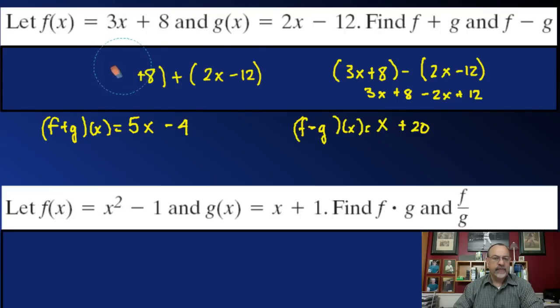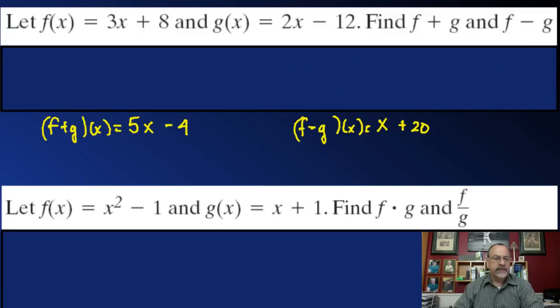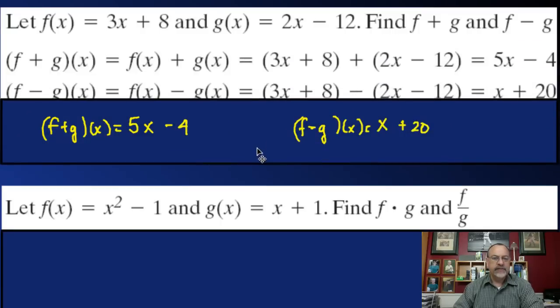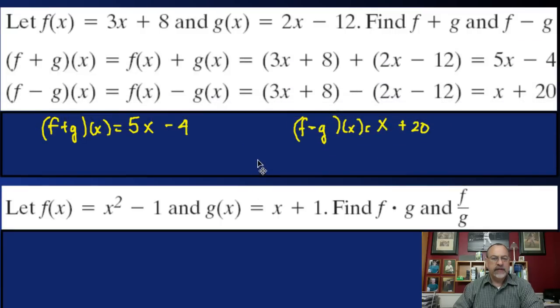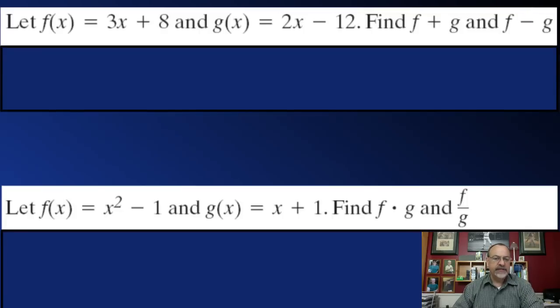Let me see if I get this right. There you see we have 5x minus 4 and x plus 20. So subtracting those is pretty easy.